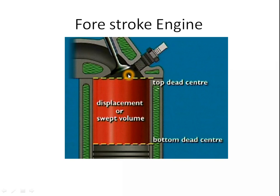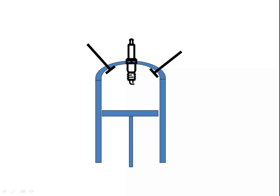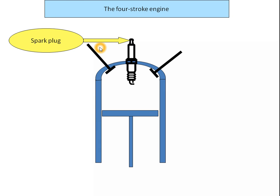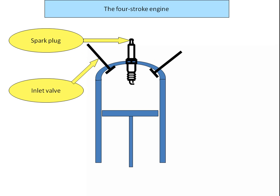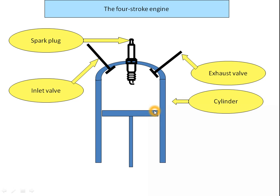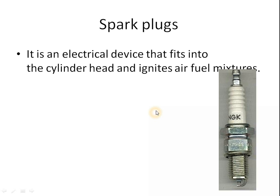This is the clearance volume of the cylinder and piston. Here is a simple diagram of a 4-stroke engine. It shows the piston, the spark plug, the inlet valve, the exhaust valve, and the cylinder with the piston labeled.